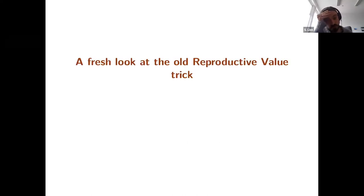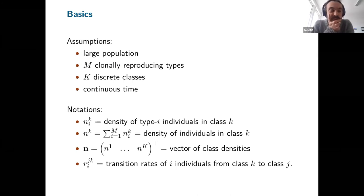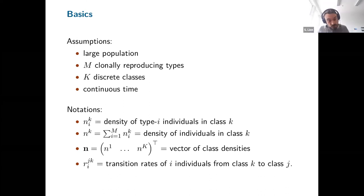The reproductive value trick is quite old — it dates back to Fisher — and here I'm going to try to present what I hope is a fresh look. The basics: I assume a large population (fully deterministic, no stochasticity), M clonally reproducing types (subtypes = different genotypes or phenotypes), K discrete classes (representing different age classes, different habitats, etc.), and I'll work in continuous time.